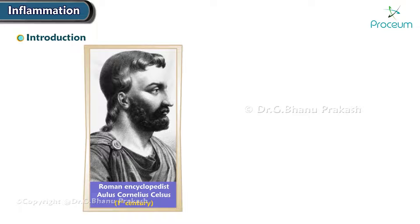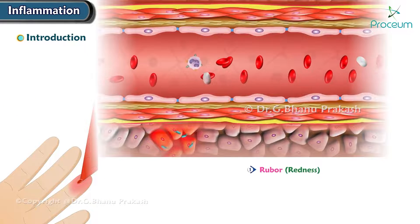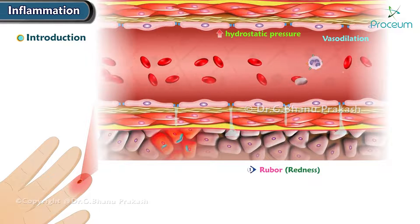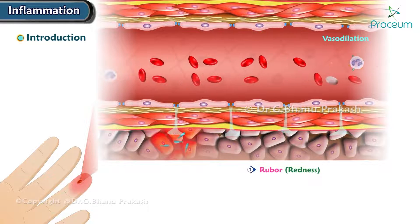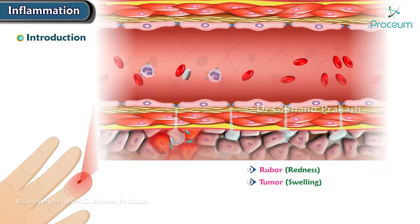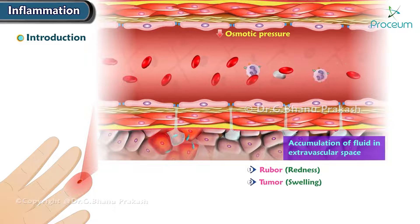In the 1st century AD, the Roman encyclopedist Aulus Cornelius Celsus described the four cardinal signs of inflammation. The first was rubor, or redness — this is due to the dilation of blood vessels. The second is tumor, or swelling — this is due to an accumulation of fluid in extravascular space.